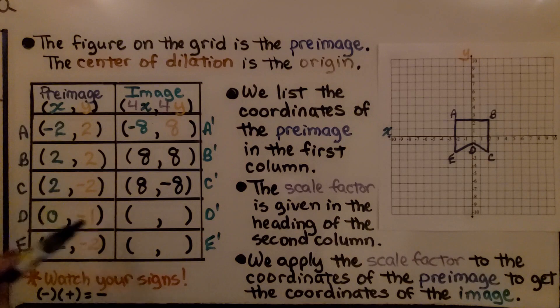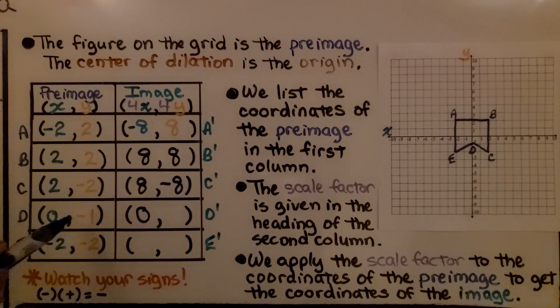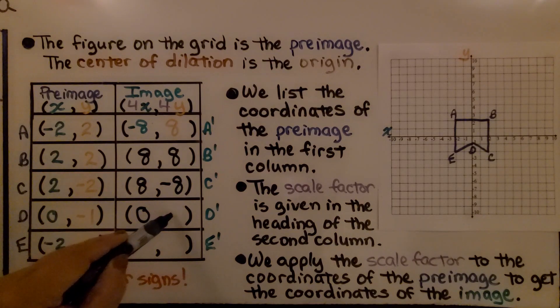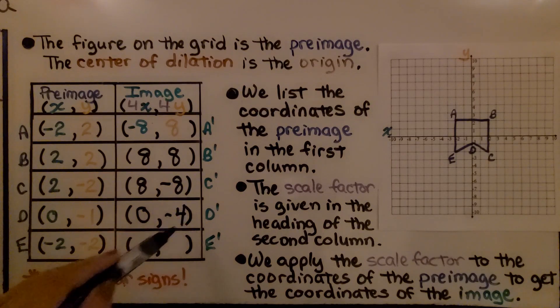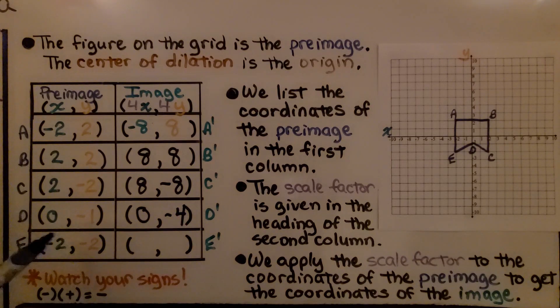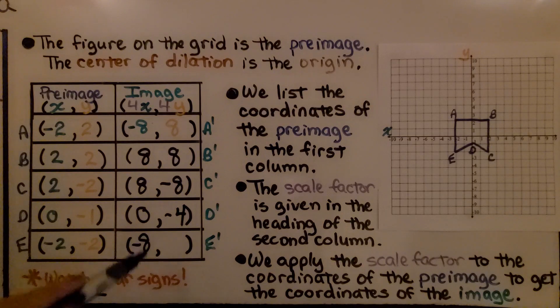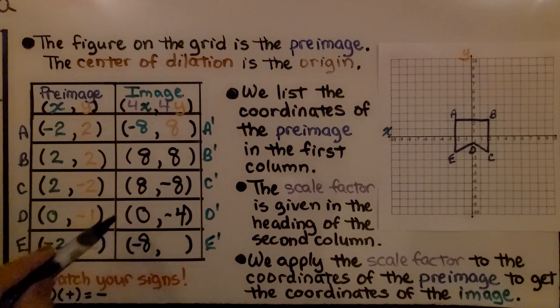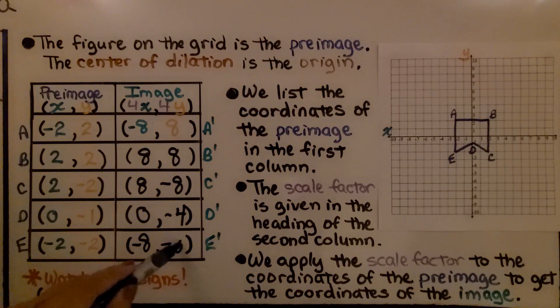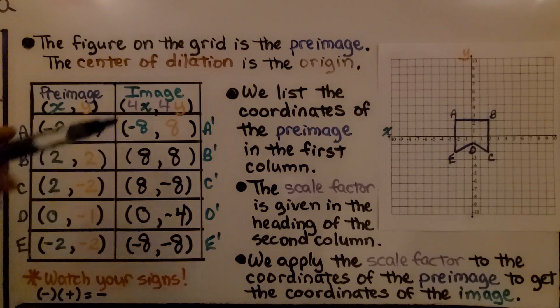Then we have 0 times 4, which remains 0, and we have negative 1 times 4, which is negative 4. And then we have negative 2 times 4, which is negative 8, and we have negative 2 times 4 again, which is negative 8. We have the coordinates for our image.